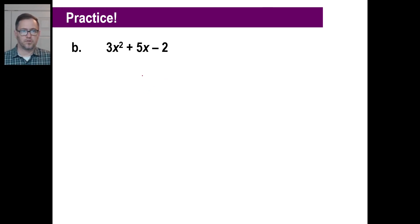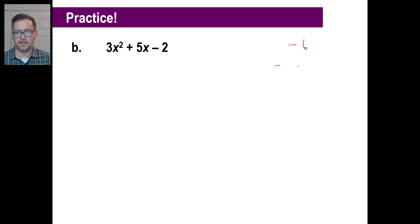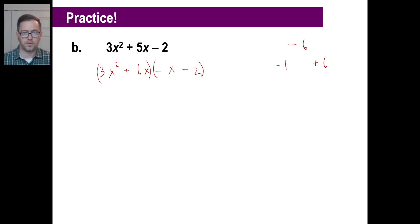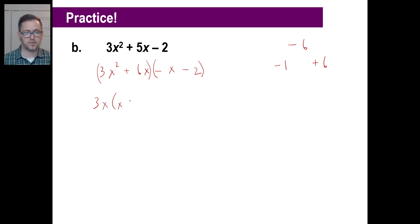Now practice problem B: 3x squared plus 5x minus 2. Multiply 3 times negative 2 to get negative 6. We need two numbers that multiply to give negative 6 and add to give positive 5. Since the product is negative, we need one negative and one positive. The factors of negative 6 that add to 5 are negative 1 and positive 6. So we rewrite as 3x squared plus 6x minus x minus 2, grouping the first two and last two terms. From the first group, factor out 3x, leaving x plus 2.